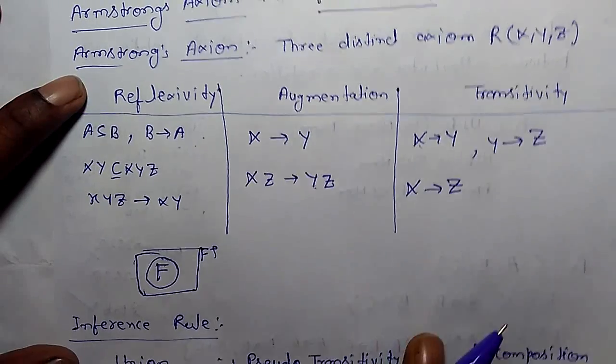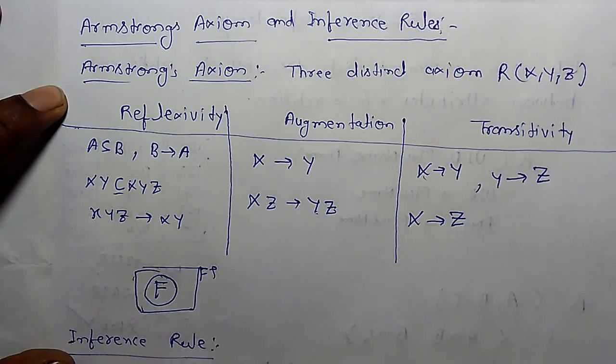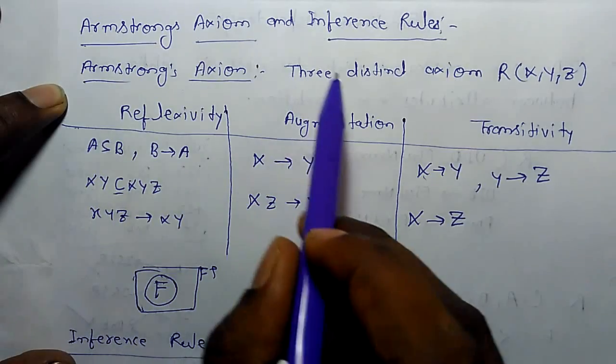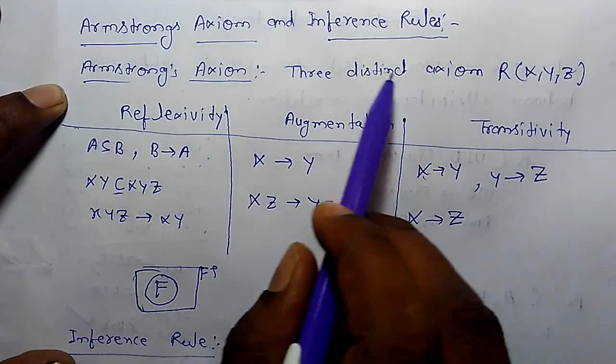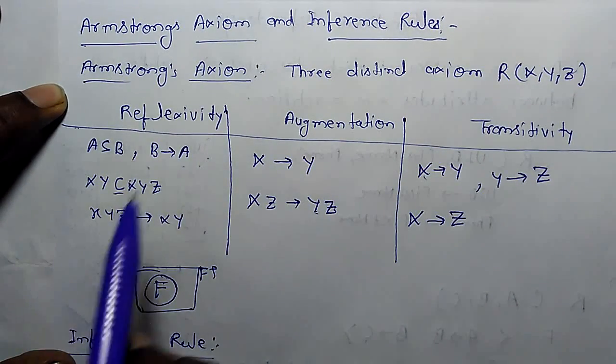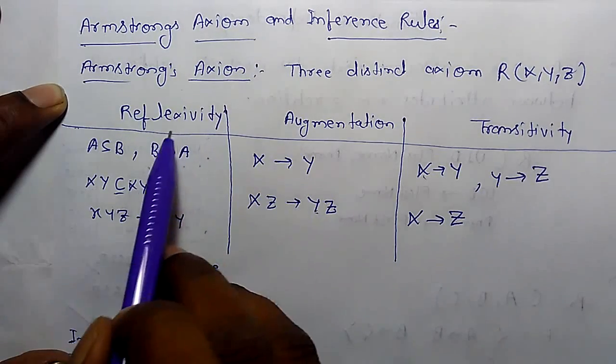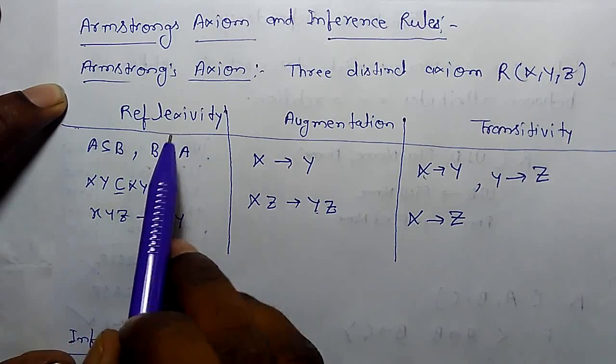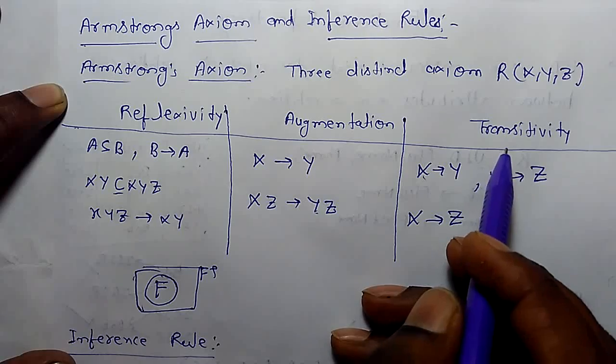There are some rules through which we can find functional dependency: Armstrong axioms and inference rules. Armstrong axioms are reflexivity, augmentation, and transitivity.